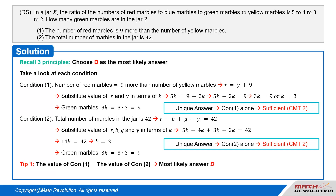Also remember, according to Tip 1, it is about 95% likely that D would be the answer when the value of condition 1 is equal to the value of condition 2. Each condition alone is sufficient. Thus, D is the correct answer. Answer: D.